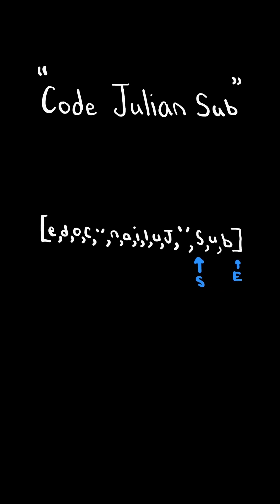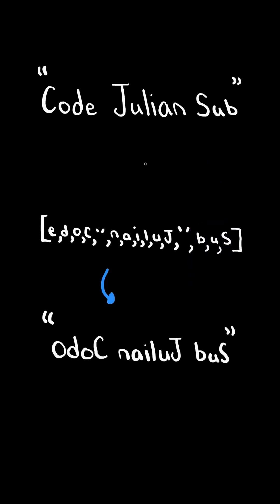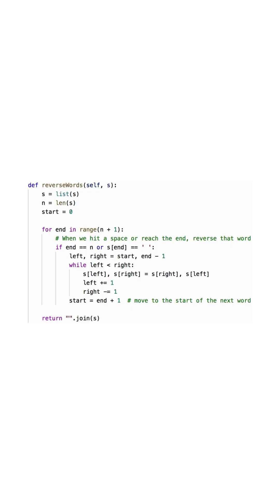When the end pointer reaches the end of the list, then we found another word that we need to reverse. So we will create our left pointer at start and our right pointer at end minus 1, and we will begin reversing the characters at left and right. When left and right equal each other, we have finished reversing the word. Finally, at the end, we join the characters in the list together.